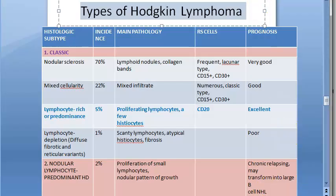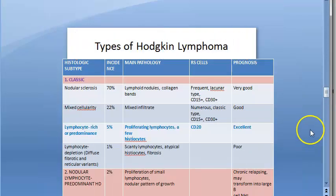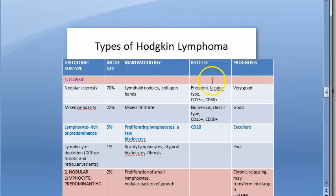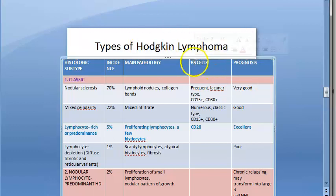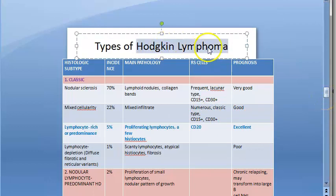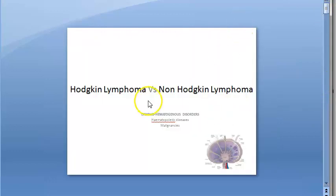Hello everyone. Today the topic is types of Hodgkin lymphoma and types of Reed-Sternberg cells — two things we will be covering. We are looking at Hodgkin lymphoma, and in the previous video we covered the differences between Hodgkin lymphoma and non-Hodgkin lymphoma.